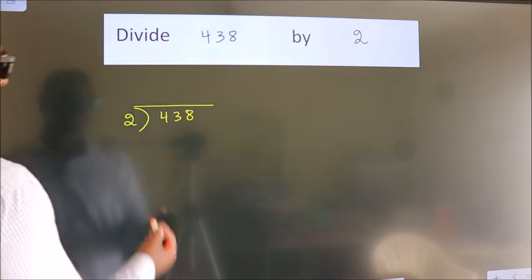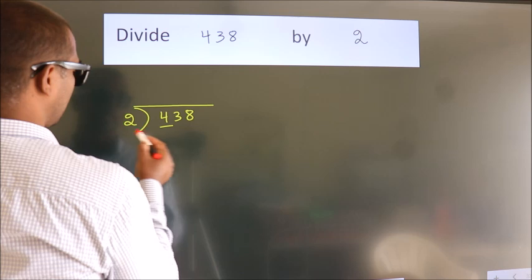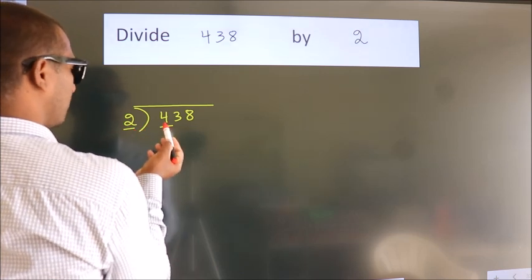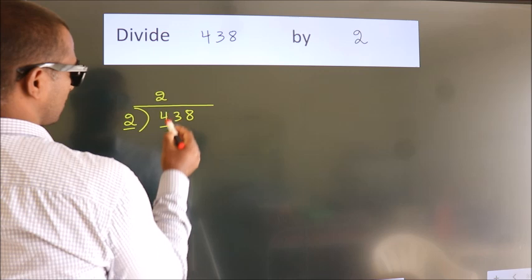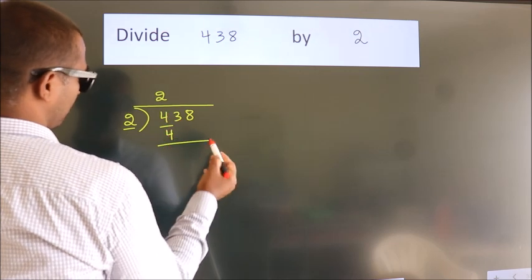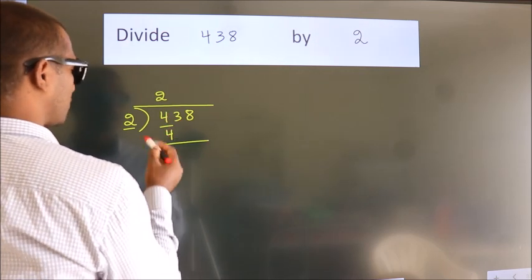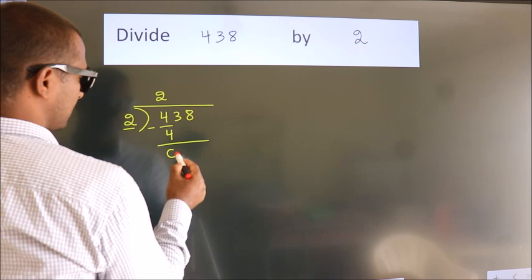Next, here we have 4, here 2. When do we get 4? In 2 table, 2 2s, 4. Now we should subtract, we get 0.